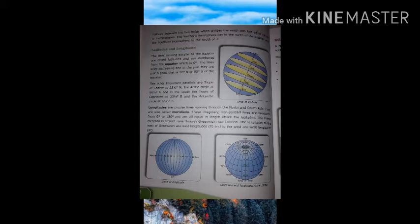Longitudes are circular lines running through the north and south pole. They are also called meridians. These imaginary non-parallel lines are numbered from zero degree to 180 degree and are all equal in length unlike the latitudes. The prime meridian is zero degree and runs through Greenwich near London. The longitudes to the east of Greenwich are east longitudes and to the west are west longitudes.